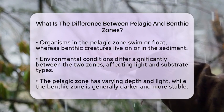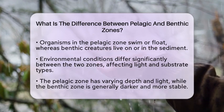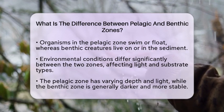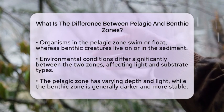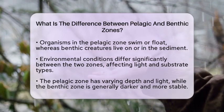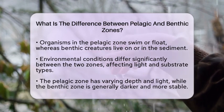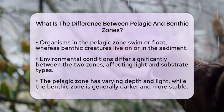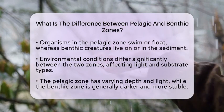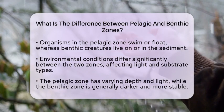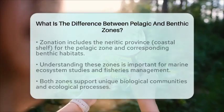The benthic zone is also more stable physically compared to the pelagic zone. When we talk about zonation, the pelagic zone includes coastal shelf waters, known as the Neritic province, and the open ocean, referred to as the oceanic province. The benthic zone corresponds to these areas but focuses on the habitats found at the bottom.